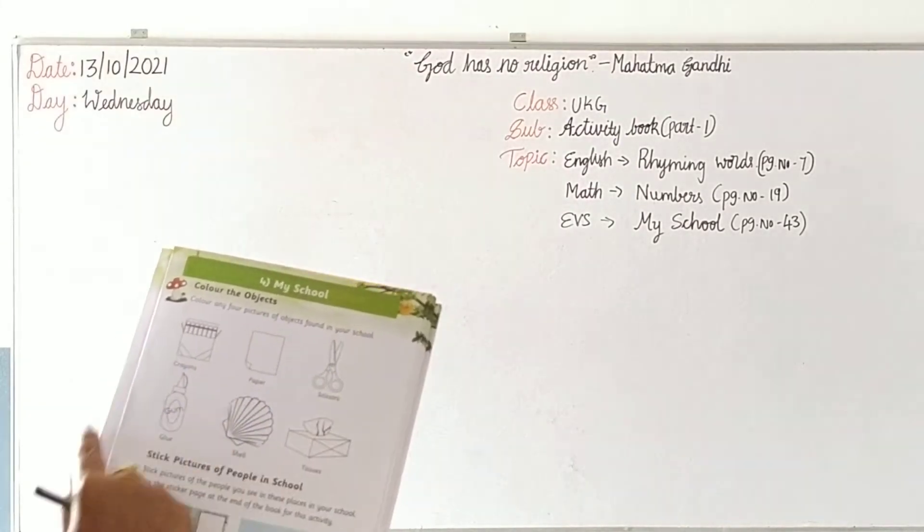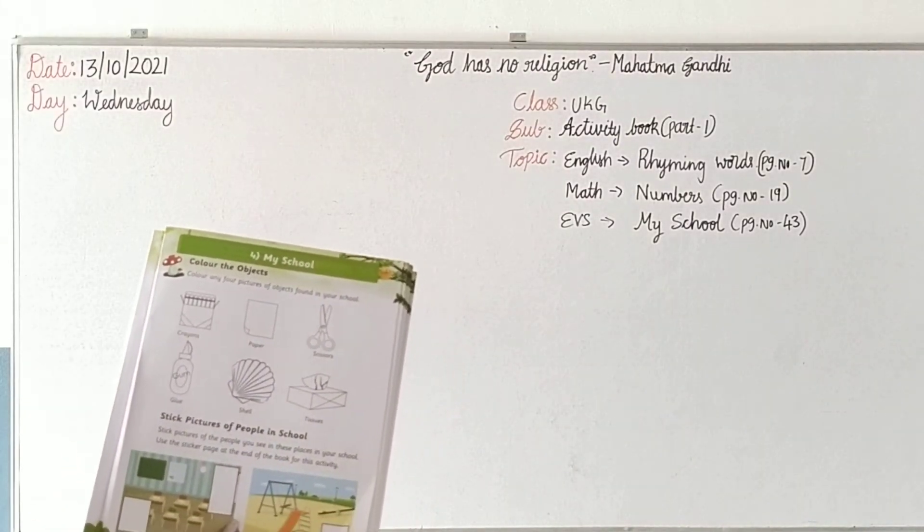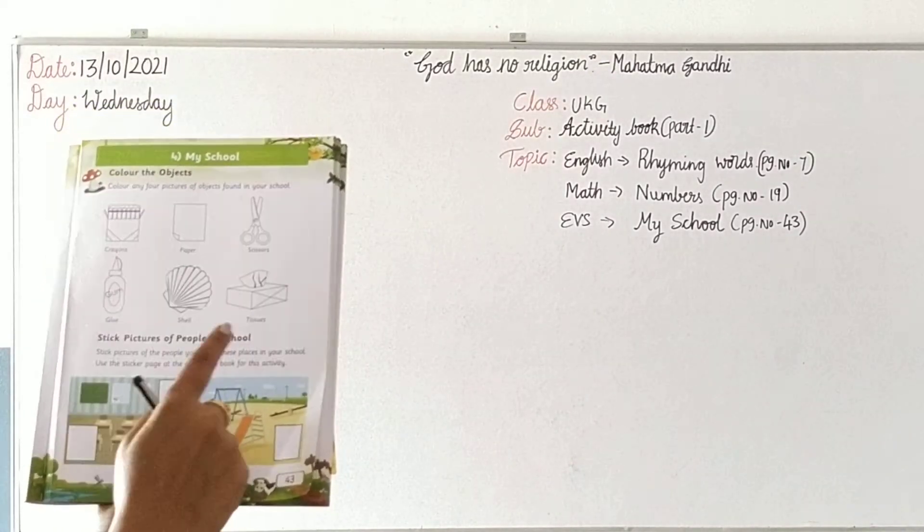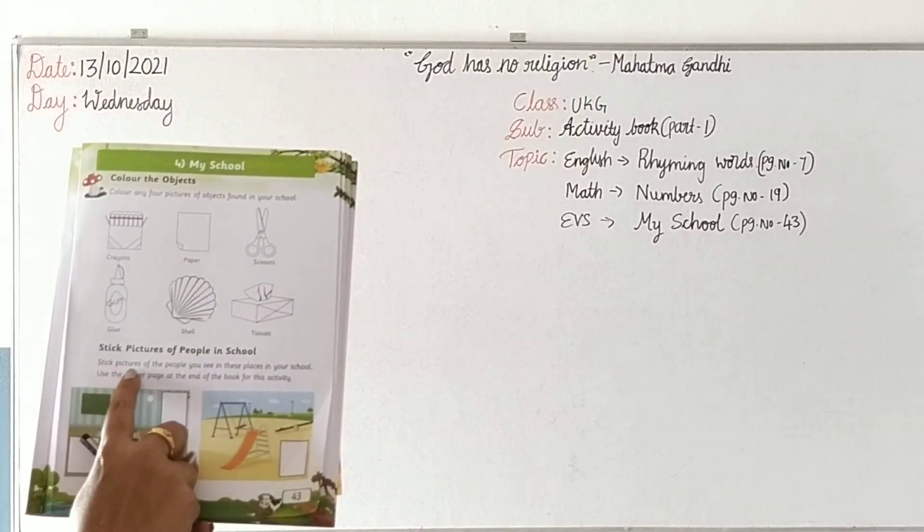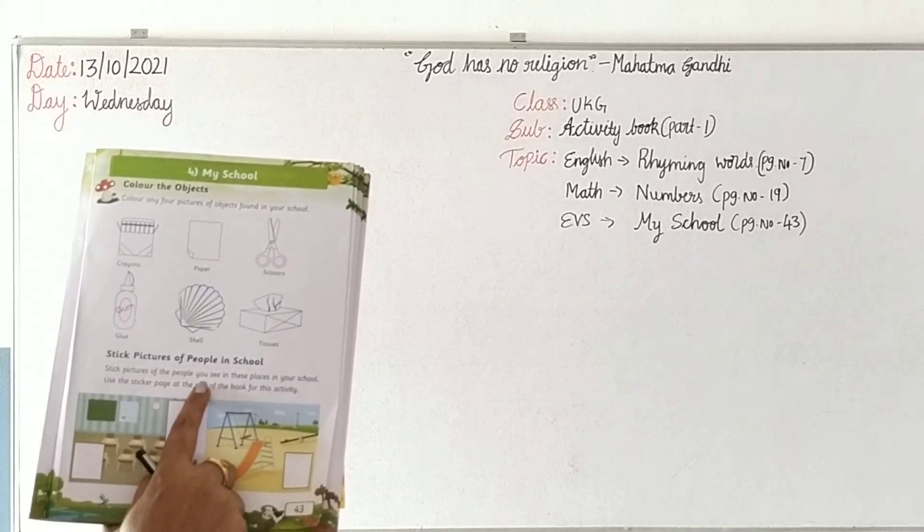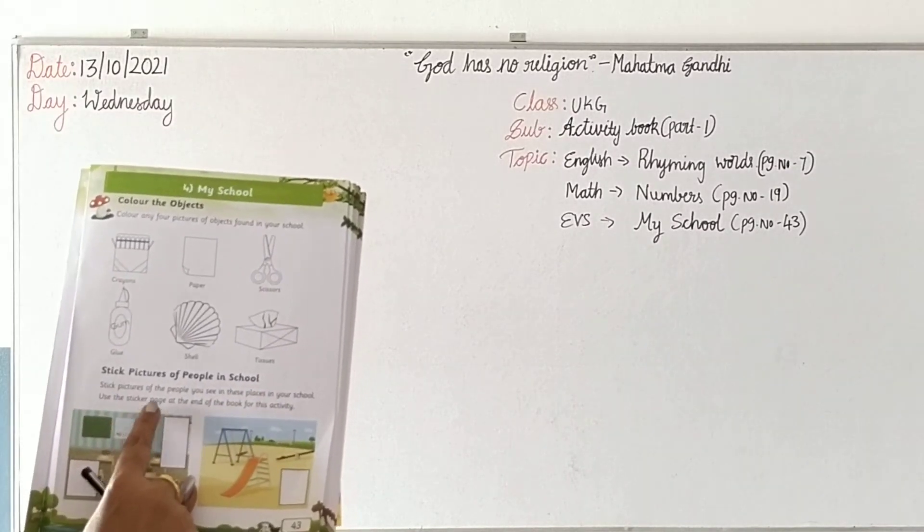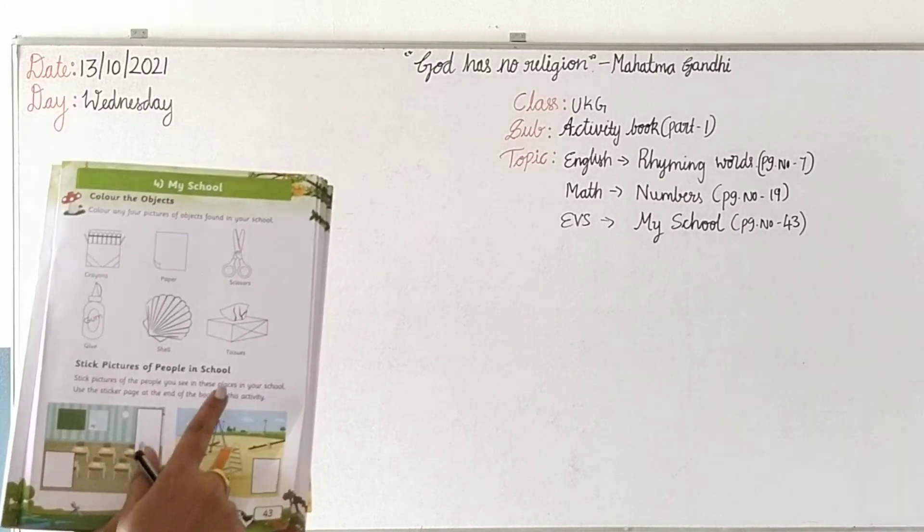This is enough, I think. Next is stick pictures of the people in school. You see in these places in your school. Use the sticker page at the end of the book for this activity.